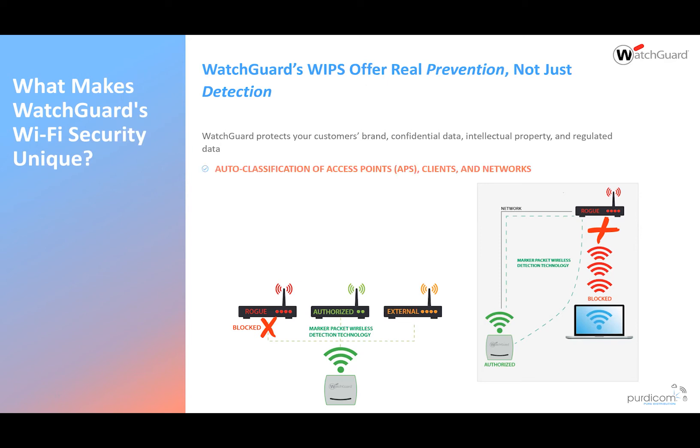We can also auto-classify access points and clients. When a client is connected to an authorized AP, they're seen as an authorized client. If we see that device — say an iPhone — trying to connect to a neighboring access point, we can say that's not allowed, de-auth them from connecting to that SSID, and put them back onto the corporate network. Our authorized wireless policy makes this a lot easier.